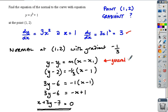3 over 1 becomes -1 over 3, then use the general equation of a straight line with your point and gradient to create the equation of the normal.